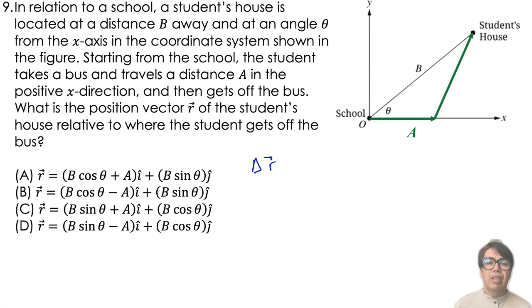This is the same as subtracting the house's position, B cosine of theta i plus B sine of theta j, minus the student's position.